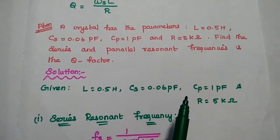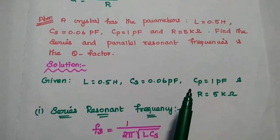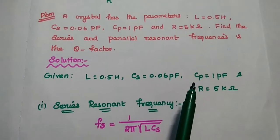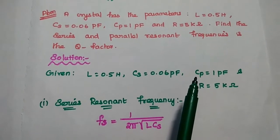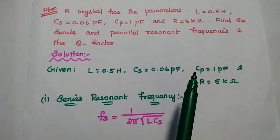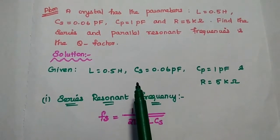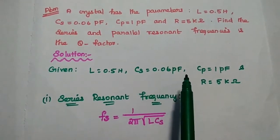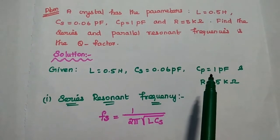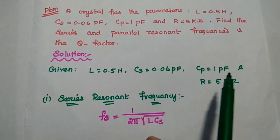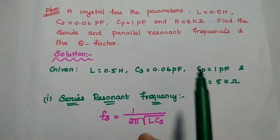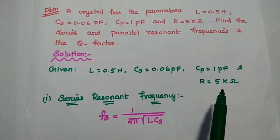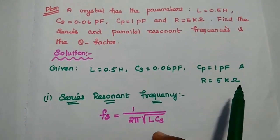In the solution, first we write the given data: L is equal to 0.5 henry, Cs is equal to 0.06 picofarad, Cp is equal to 1 picofarad, and resistance R is equal to 5 kilo ohm.